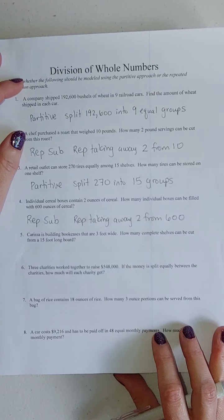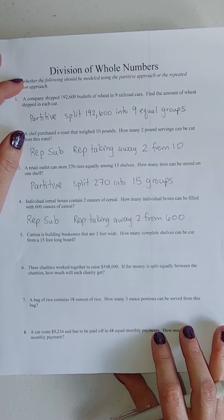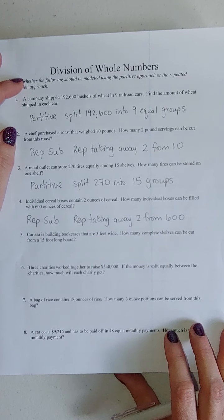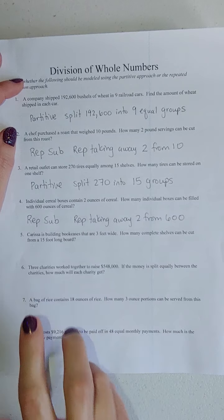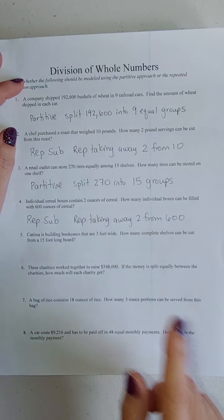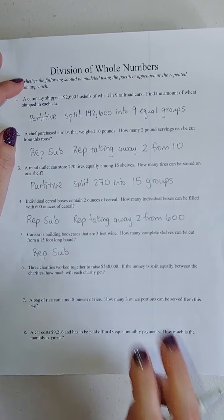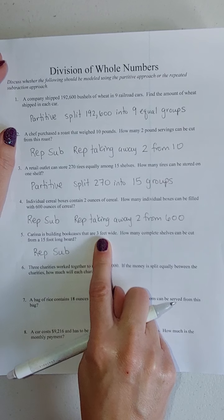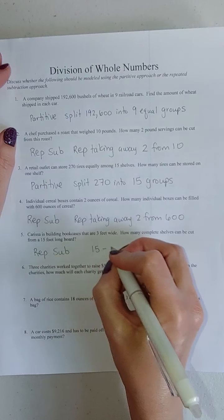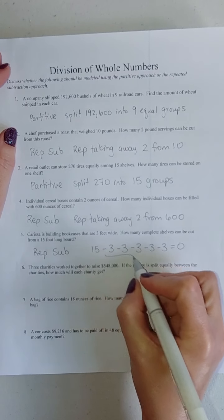Number five, Carissa is building bookcases that are three feet wide. How many complete shelves can be cut from a 15-foot-long board? Is this partition or repeated subtraction? 15 feet is my total board length. Am I splitting this into three pieces or am I repeatedly cutting three feet away from it? I'm repeatedly cutting three feet away. So this one's repeated subtraction as well. This is a 15-foot board, but I want each one to be three feet wide. Cut off a three-foot section, another one, another one, another one. You do this five times.